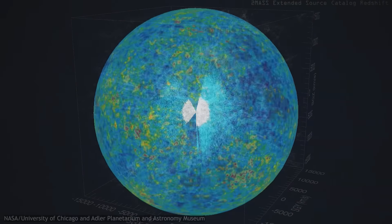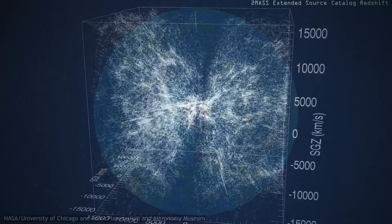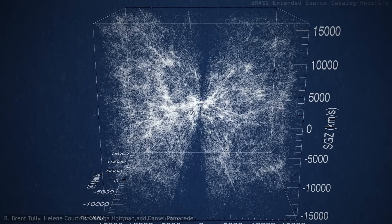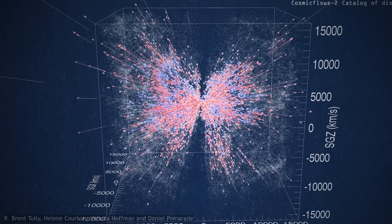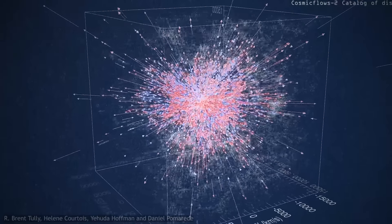Any movement within the Universe relative to that frame will distort our image of the CMB. It will appear blue shifted in our direction of motion, and red shifted away from our direction of motion. And that's exactly what we observe.